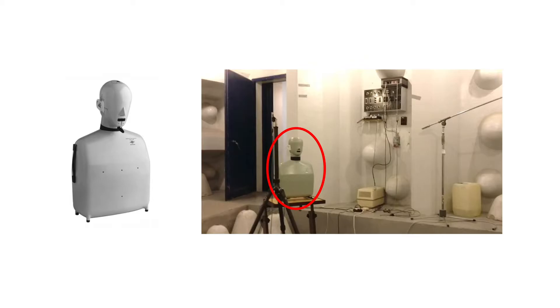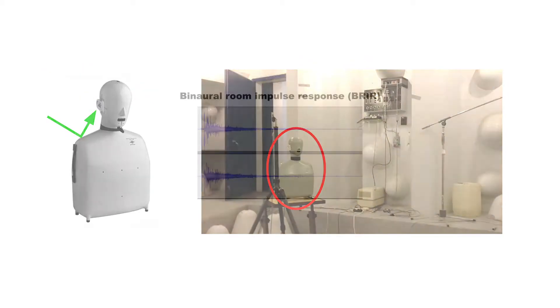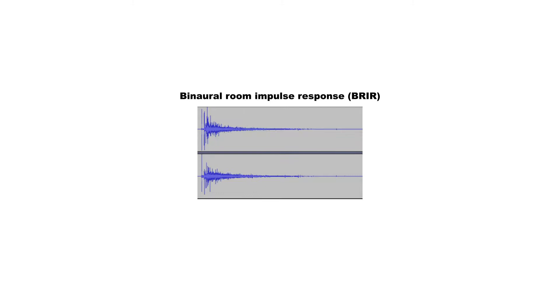For real rooms, this is typically achieved by recording with a dummy head instead of a microphone. A dummy head has microphones inside the artificial ears. When the sound is recorded in this manner, the effects of the human body on the incoming sound are recreated, such as the time and level differences, and the reflections from the shoulders. The resulting impulse response is called a binaural room impulse response.